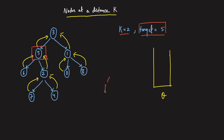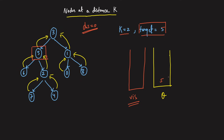You will need a queue data structure containing the target node, a distance variable initialized to 0, and a visited hash map. You mark the target node 5 as visited, and note that it is at distance 0 from itself. Then you start iterating from the queue.